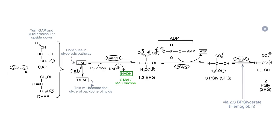The acyl phosphate of 1,3-bisphosphoglycerate then phosphorylates ADP to form ATP in the first ATP-forming step of glycolysis. Keep in mind that two molecules of GAP have been formed upstream, so for each molecule of glucose you get two molecules of ATP at this step. The enzyme is phosphoglycerate kinase. After 1,3-bisphosphoglycerate loses its terminal phosphate from the 1-carbon, it forms 3-phosphoglycerate. Phosphoglycerate mutase then moves the phosphate from the 3 to the 2-carbon, forming 2-phosphoglycerate, the next intermediate in the glycolysis pathway.